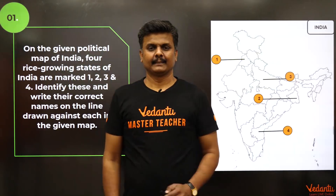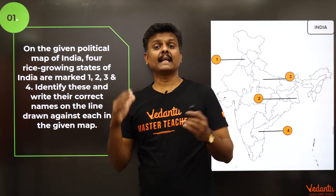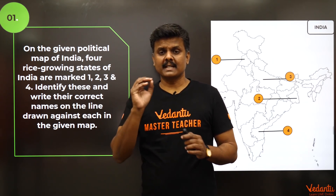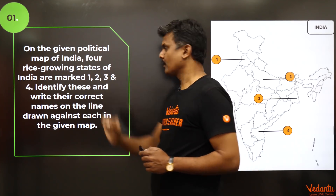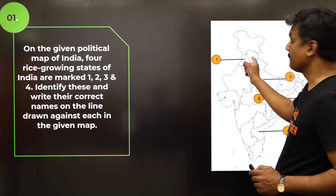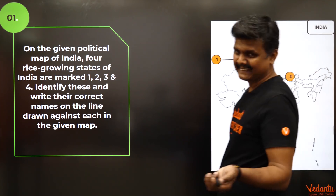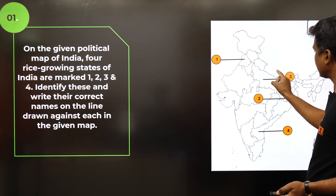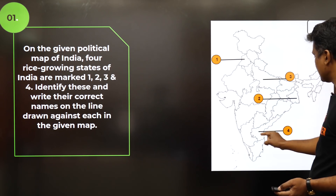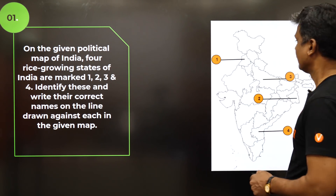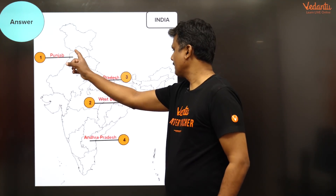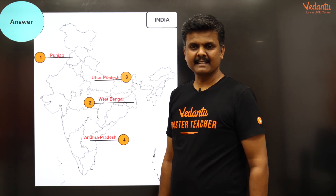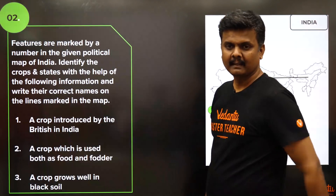Sample question: On the given political map of India, four rice-growing states are marked — identify their names. Number one is Punjab, which is also known for wheat. Number two is West Bengal. Number three is Uttar Pradesh. Number four is Andhra Pradesh.